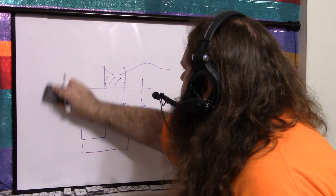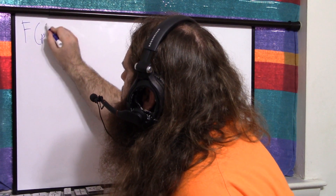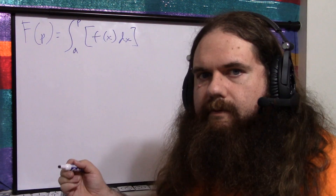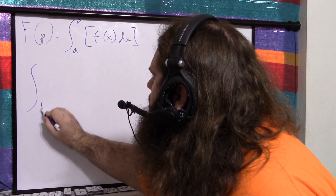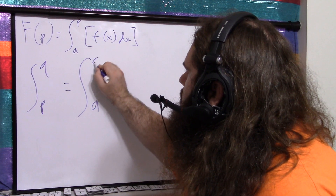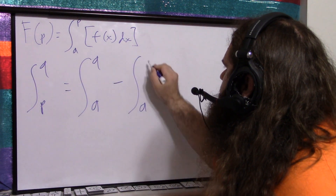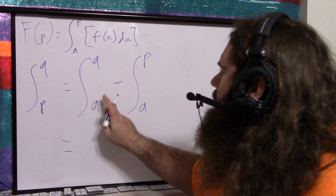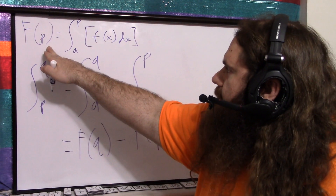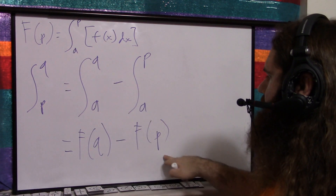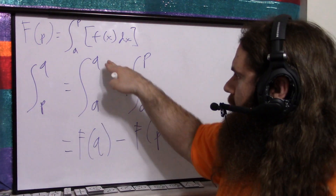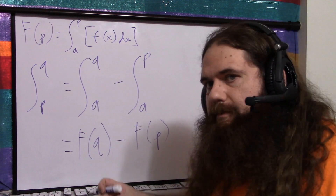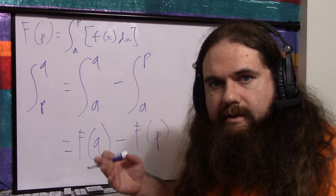Let's do the math: F(p) equals the integral from a to p of f(x) dx. The integral from p to q equals the integral from a to q minus the integral from a to p. That is F(q) minus F(p). So if you can calculate those two and subtract them, that's the integral — that's your four miles in the previous example.